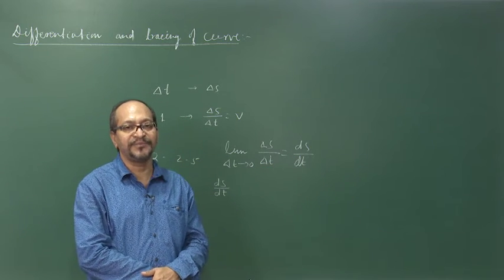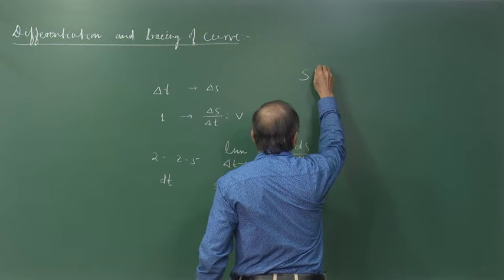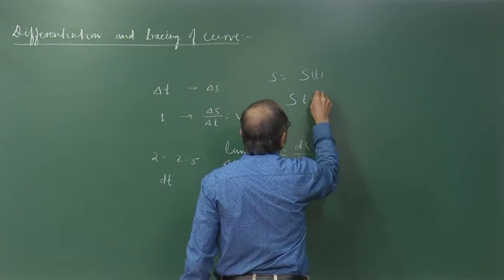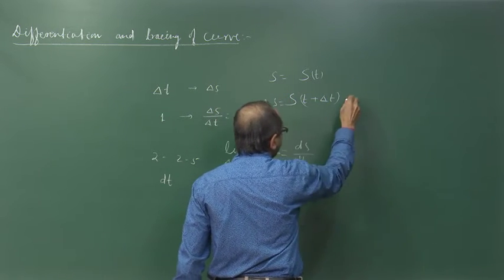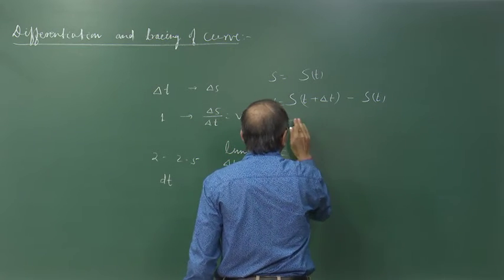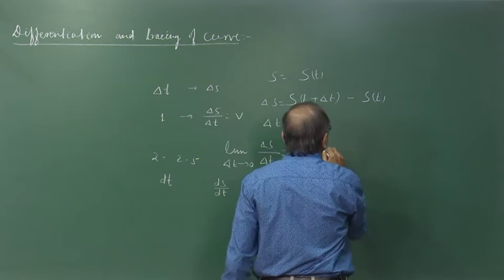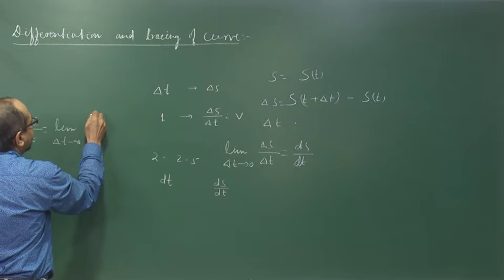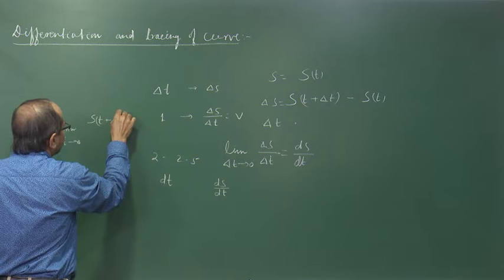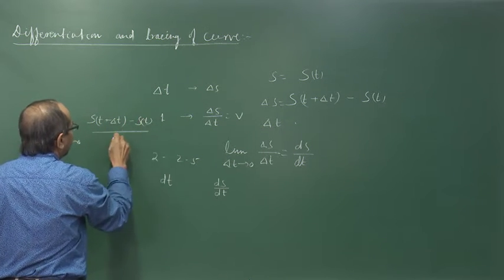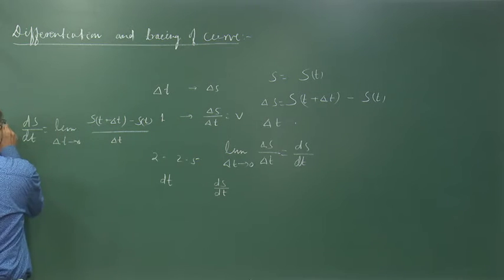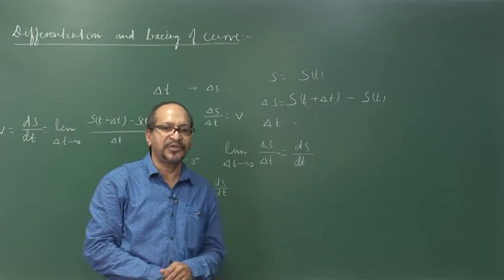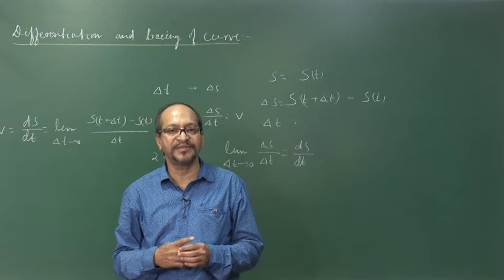This process is called the derivative ds by dt. Since the body is moving, s is a function of t. When time changes to t plus delta t, displacement becomes s(t + delta t). So delta s becomes s(t + delta t) minus s(t), and ds by dt is the limit of delta t tends to 0 of [s(t + delta t) minus s(t)] divided by delta t. This is the derivative of displacement with respect to time, giving us the instantaneous velocity.